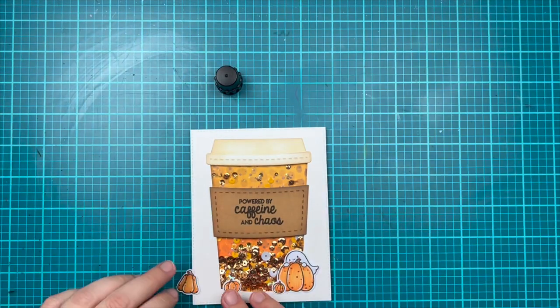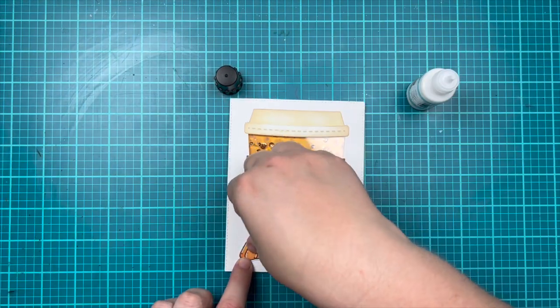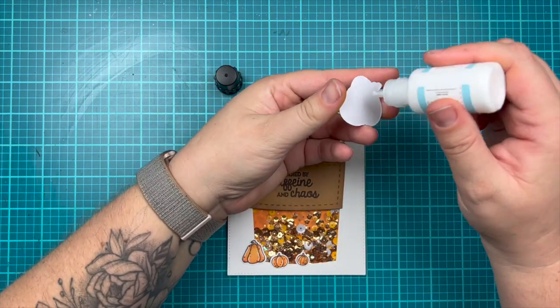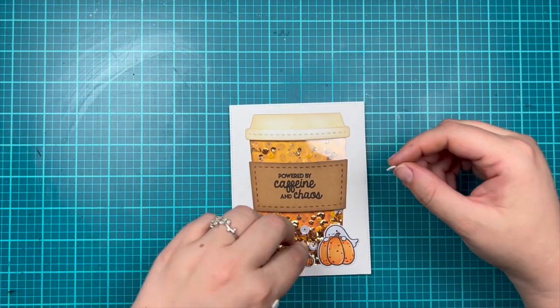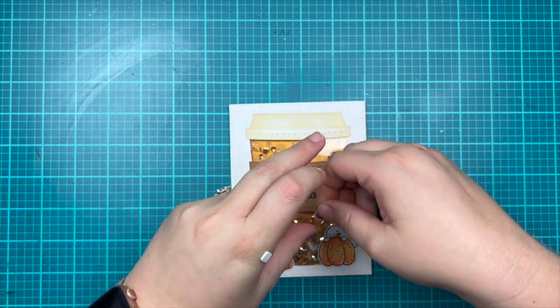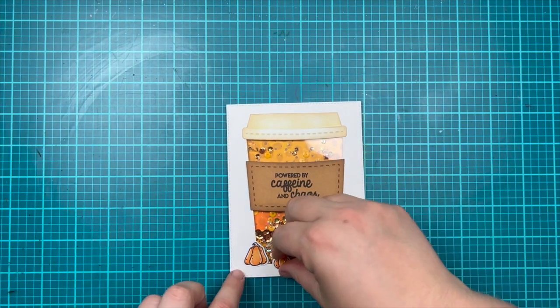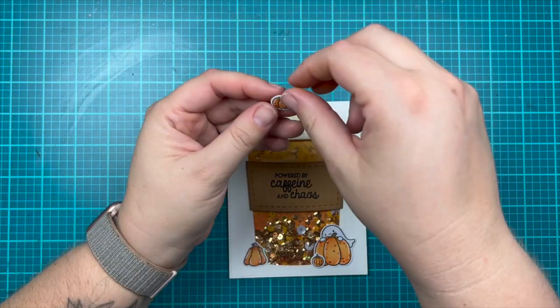I'm going to use my Gluebert to adhere down the pumpkin on the left as well as my pumpkin with the little ghost, and then I am going to use two of those thinner foam square adhesives behind my two little mini pumpkins and add those down to overlap with the pumpkins I glued down with my Gluebert. That will finish off my card.